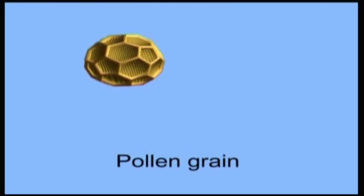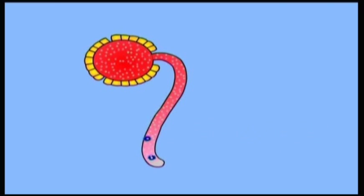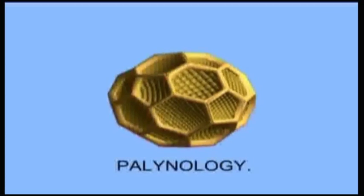Pollen grains are haploid i.e. N and are otherwise known as microspores or male gametes. They contain only one set of chromosomes i.e. N. The study of pollen grains is called palynology.